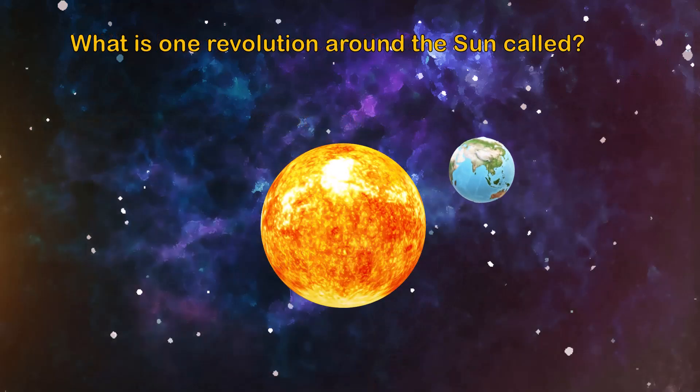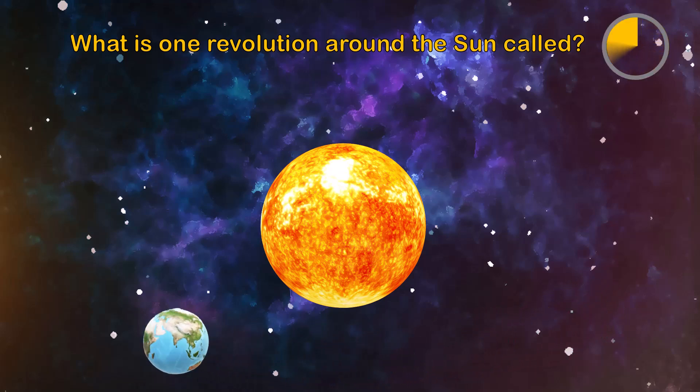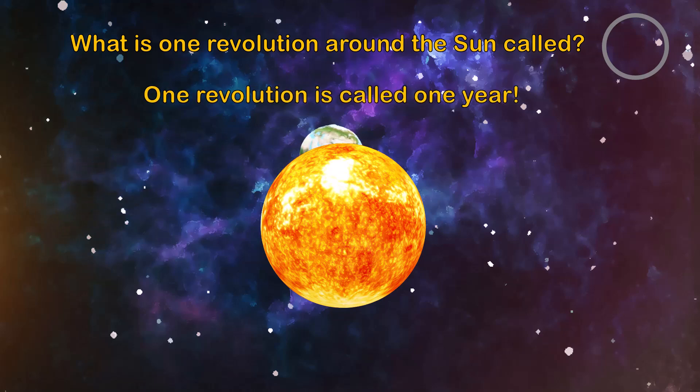Question three. What is one revolution around the sun called? One revolution is called one year.